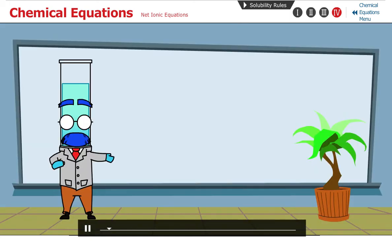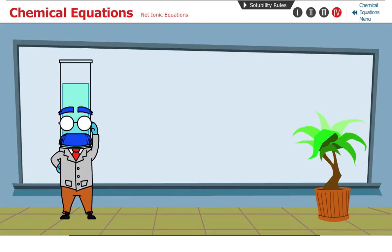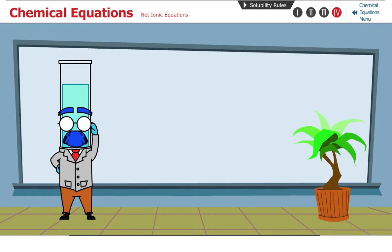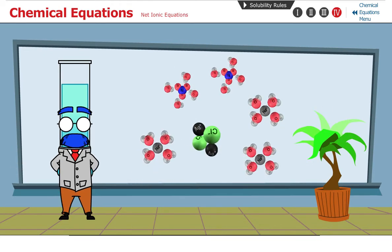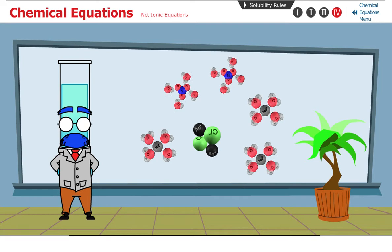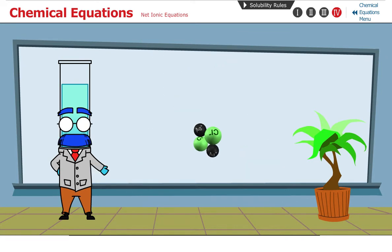The last equation that chemists use is a shortcut. It's an equation that represents only the species that react, or in this case, form a precipitate. The ions that do not change or do not form a new substance are called spectator ions, and these are left out of the equation so we don't have to do so much writing.